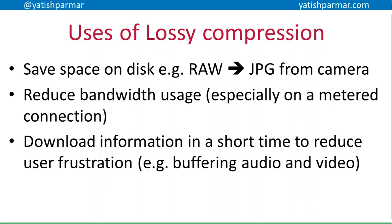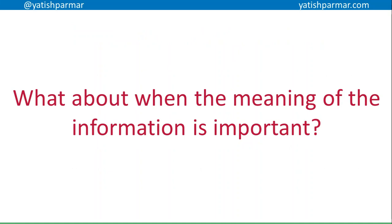These are some of the reasons why we want to use lossy compression. For example, your camera shoots in RAW — you want to store those as JPEGs just to save space. If you've got a 20 megapixel camera, you're probably going to have 20 megabytes per image, whereas if you store it as a JPEG it might only be a couple of meg. These are the expansions you might talk about when writing about compression.